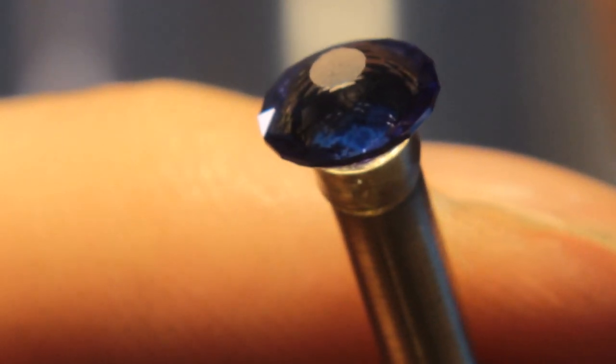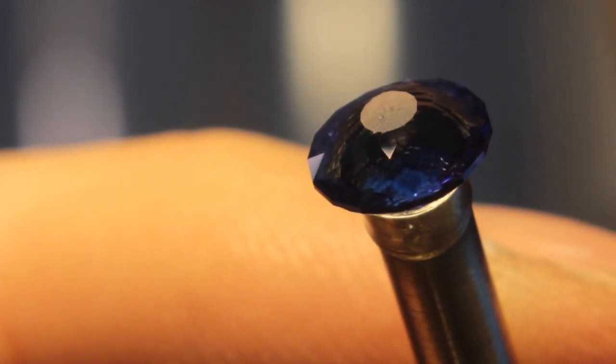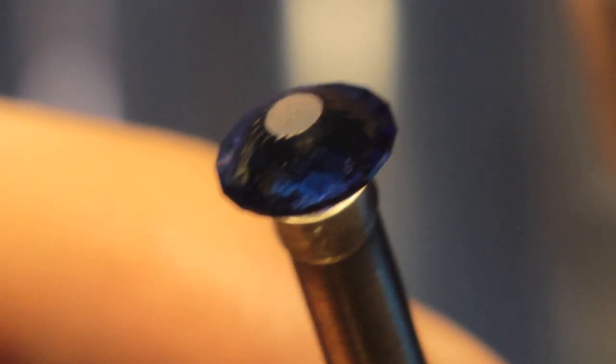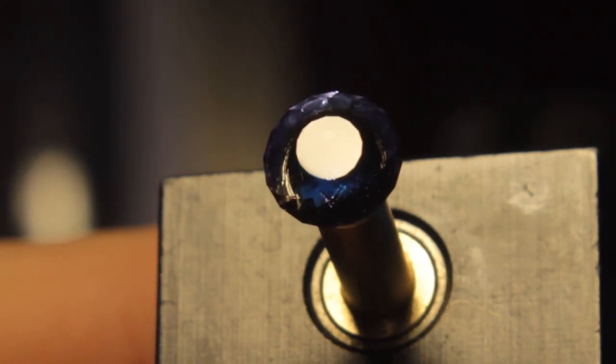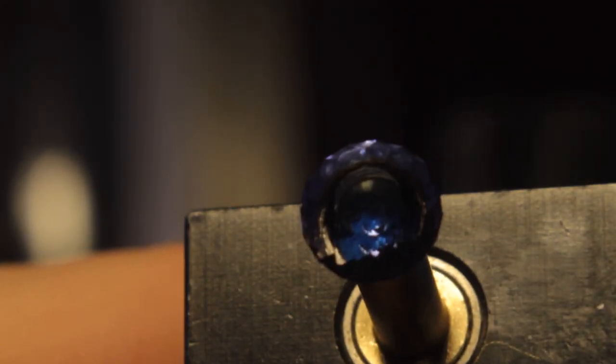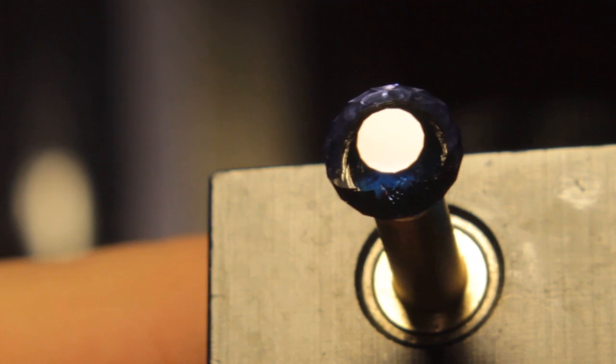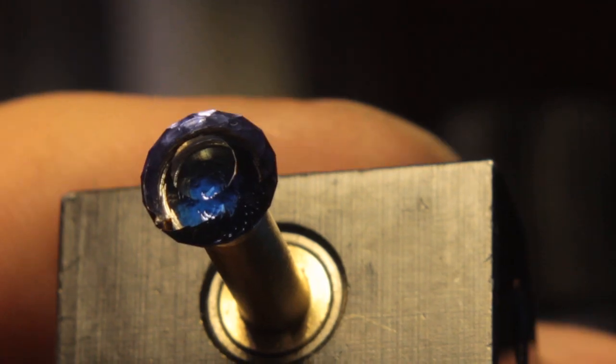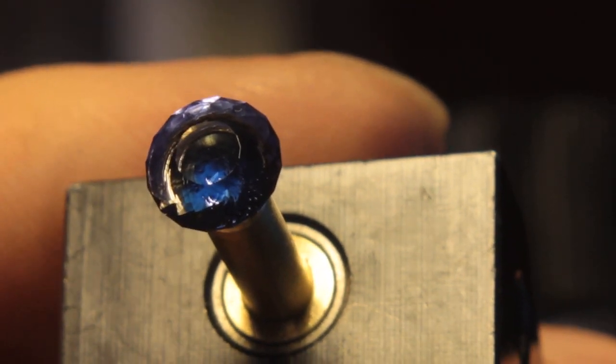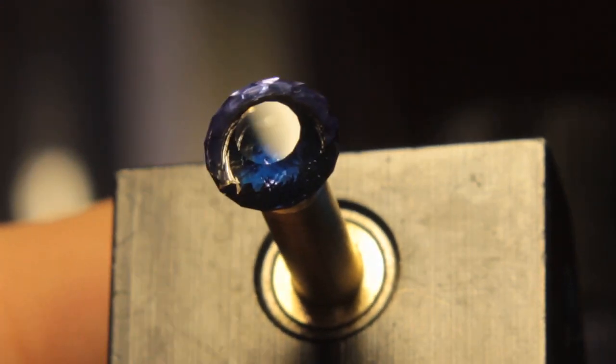So now I'll take the stone out of the spindle and set it up to cut the table. I finished polishing the table of our tanzanite. So now I'll take it out of the spindle and soak it in acetone. Then we'll weigh it, measure it, and send it off to Bopey.